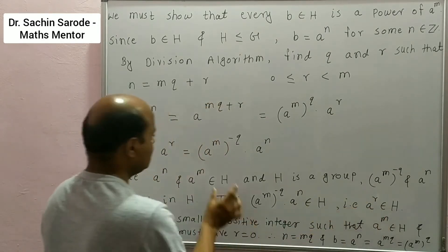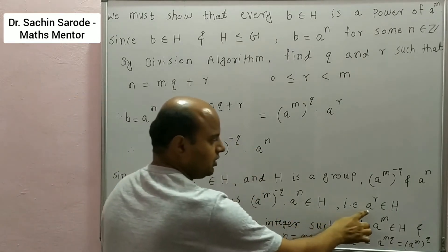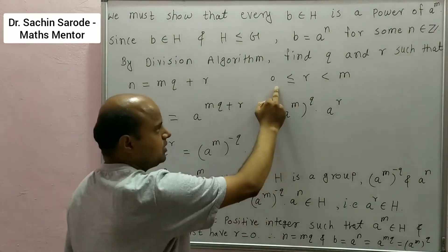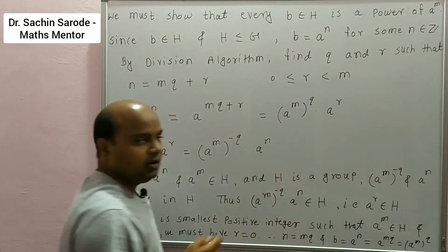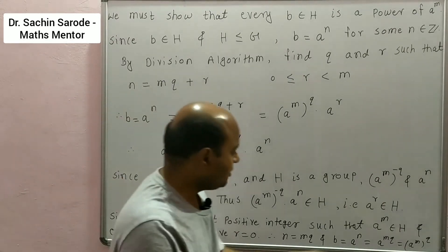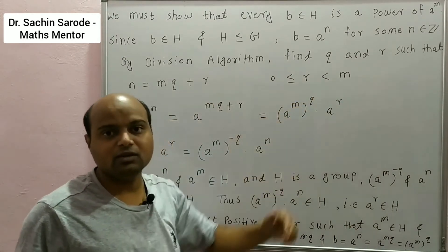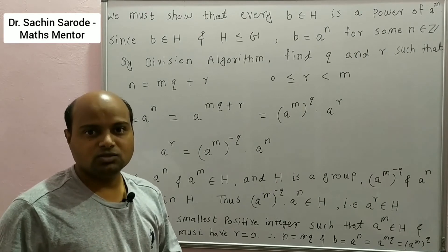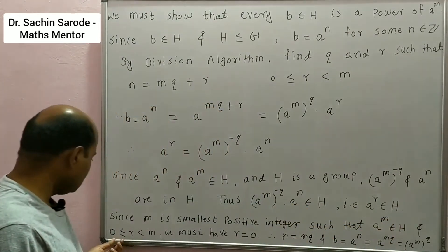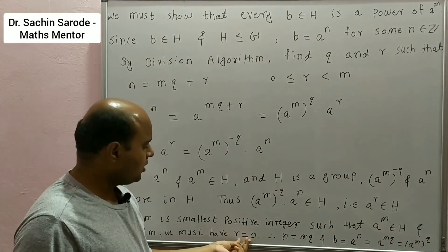So we got A^R in H. Now, the value of R satisfies 0 ≤ R < M. We had already taken M to be the smallest positive integer such that A^M is in H, and we are getting A^R is in H. But R is strictly less than M — this gives a contradiction. Therefore R must equal 0, since M is the smallest positive integer such that A^M is in H and R ≥ 0 with R < M, we must have R = 0.